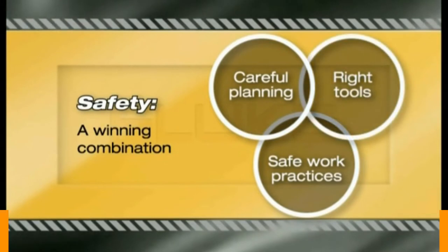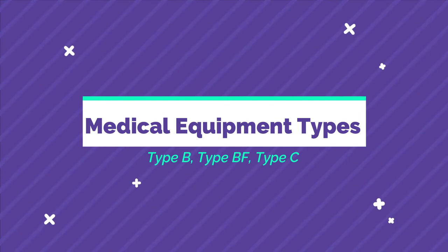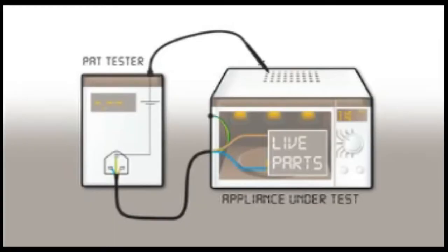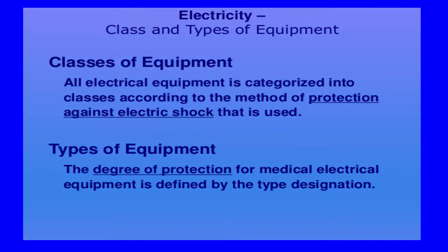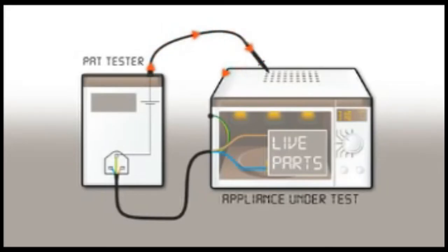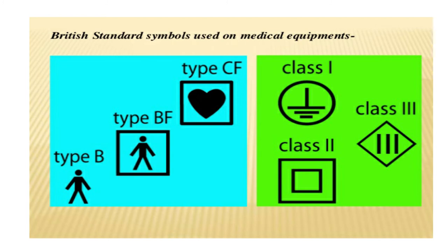In this last video, we will cover the Medical Equipment Type. The class of equipment defines the method of protection against electric shock. The degree of protection for medical electrical equipment is defined by the type designation. The reason for the existence of type designations is that different pieces of medical electrical equipment have different areas of application, and therefore different electrical safety requirements.